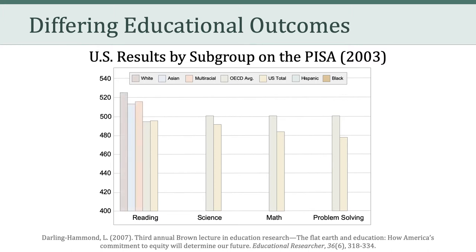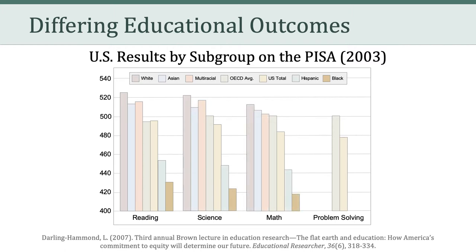Here we can see how whites, Asians, and multiracial subgroups perform in reading — notice that it's higher than the OECD average as well as the U.S. total. Here we see how Hispanics and Blacks perform on reading. We see a similar pattern in science, as we do with math, and as we do with problem solving.